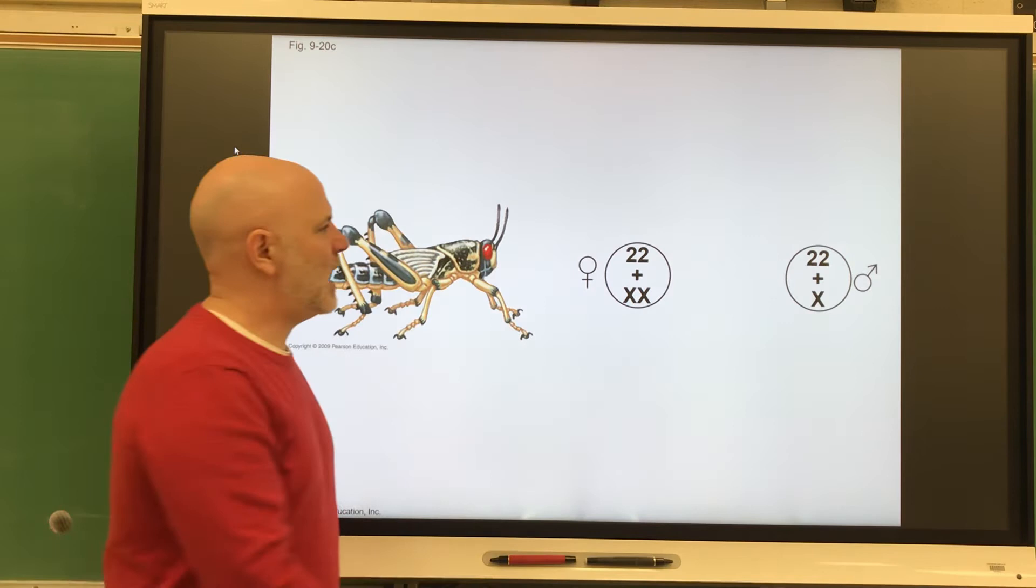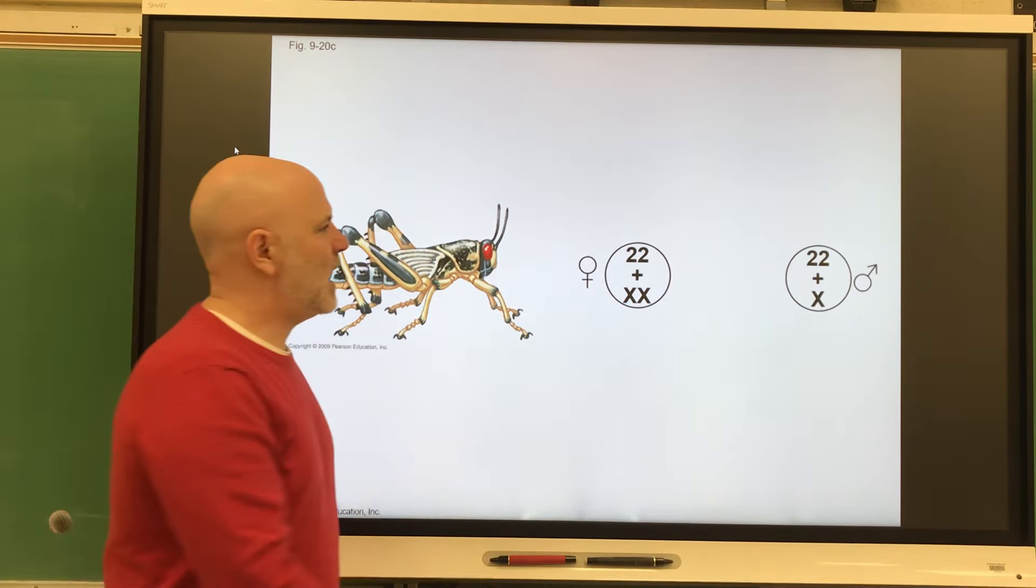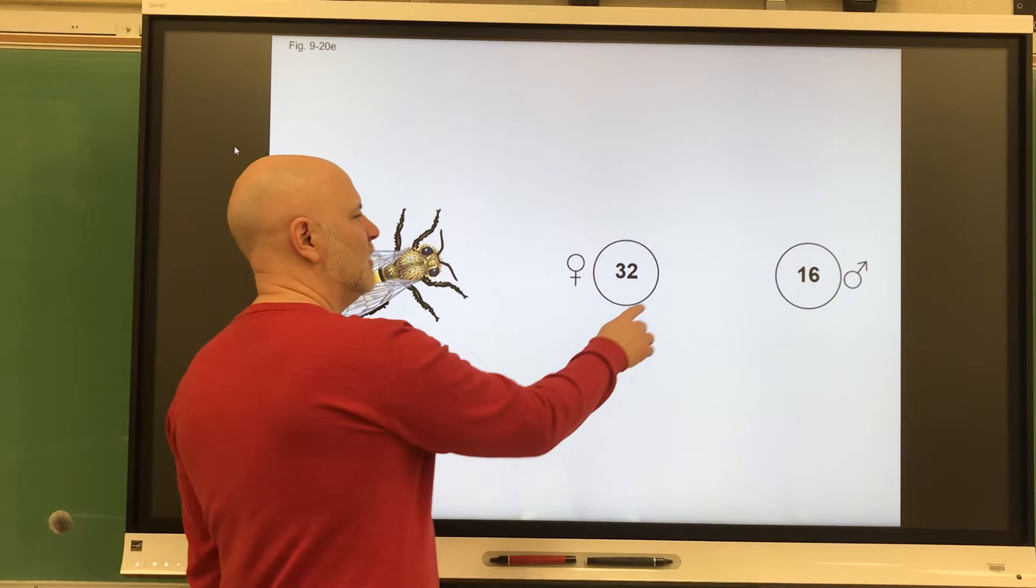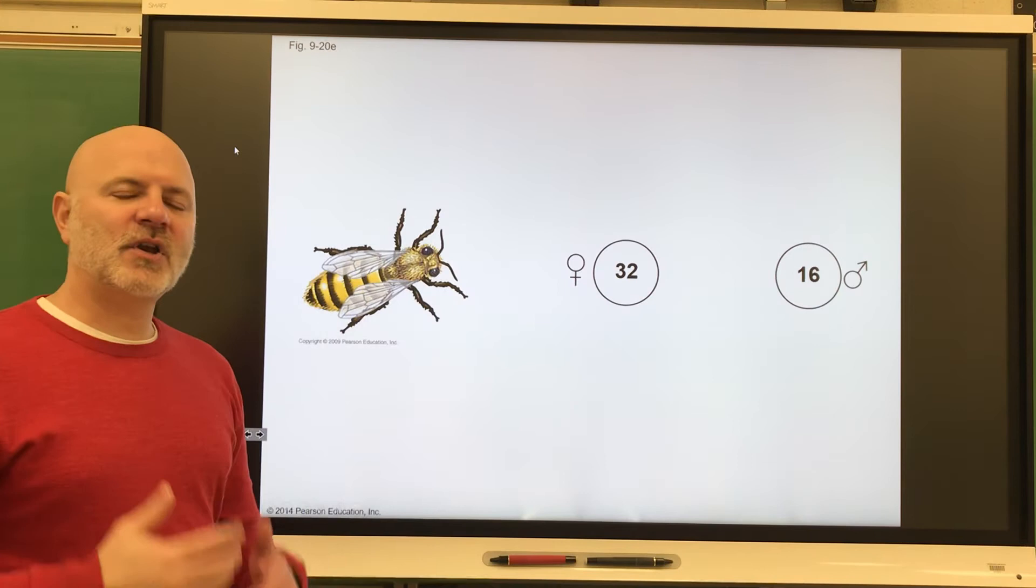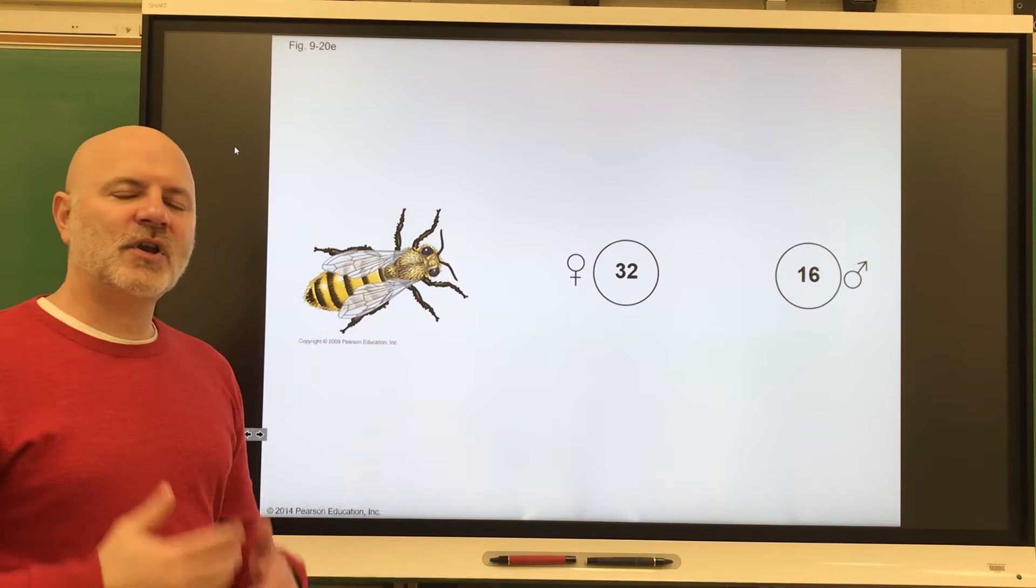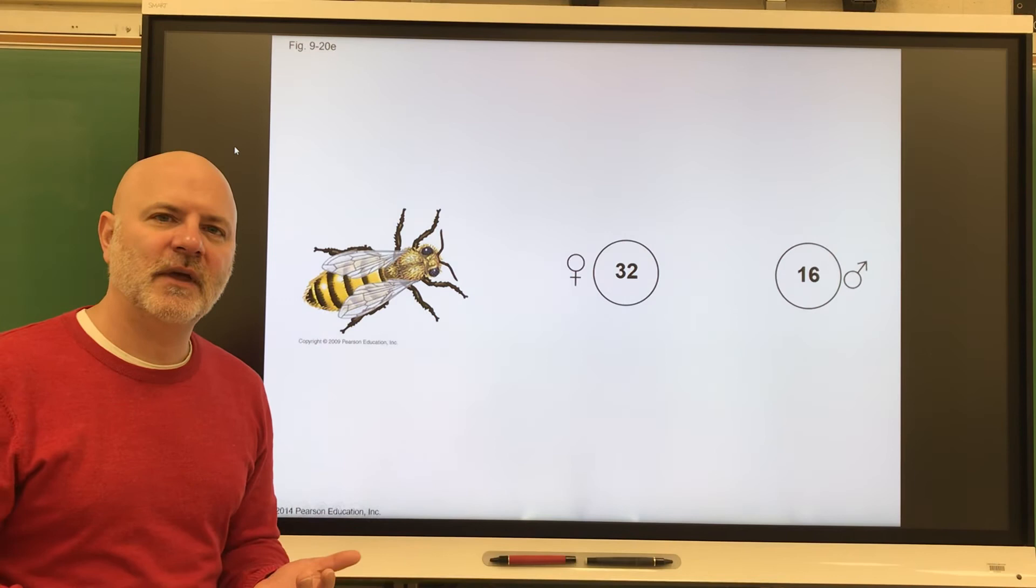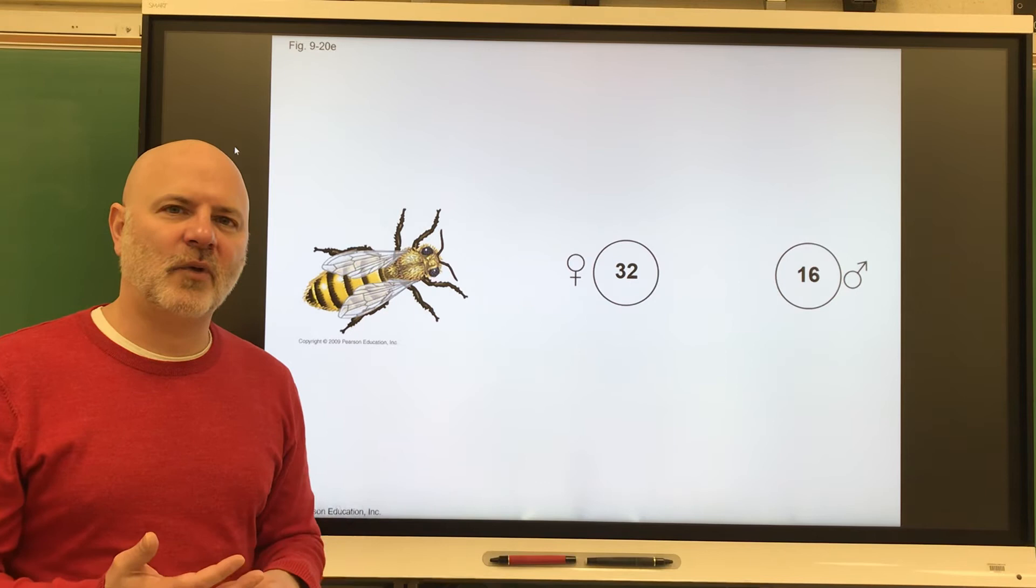Some animals don't use sex chromosomes at all. One example here is bees. In bees, it's the number of chromosome sets that determine the sex of the offspring. With bees, females are diploid and males are haploid. What happens with bees, wasps, and ants actually, is that males are produced from an unfertilized egg. The male will develop, go out and find a female, reproduce with the female, and then die. That's pretty much all the males are used for in bee, wasp, and ant societies.